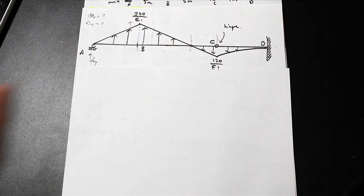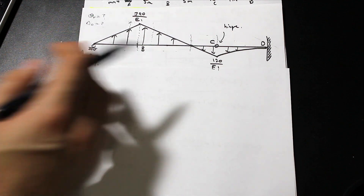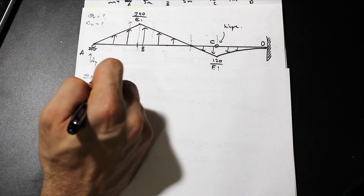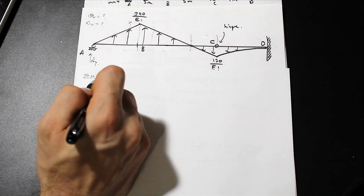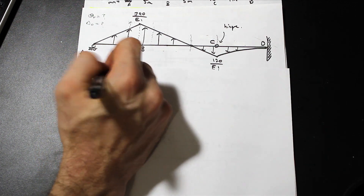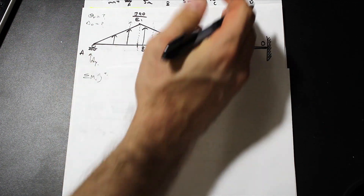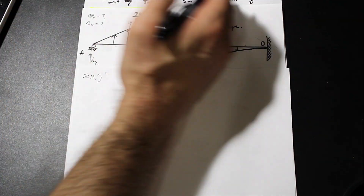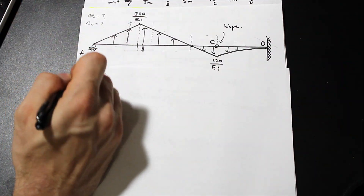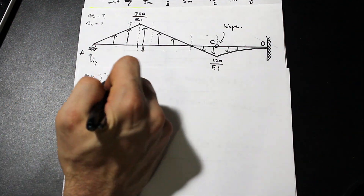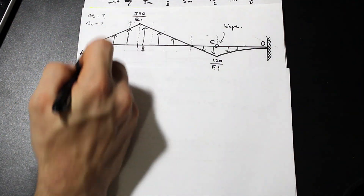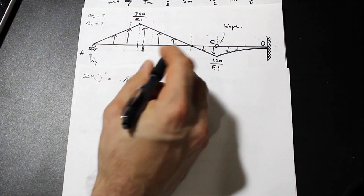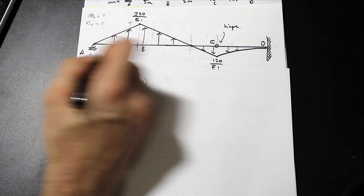First, let's solve for Ay. We'll take the moment about C, because at C we have a hinge, so we can cut the beam at C and take the moment of just the left portion to find A. So we have Ay times 10 — that's a negative moment.